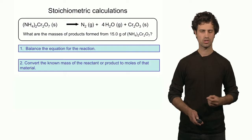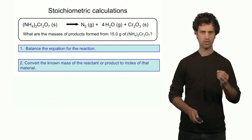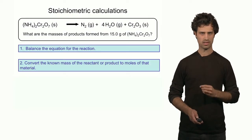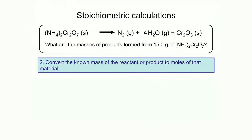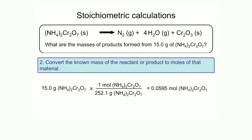The second step is to convert the amount in grams of the reactant into the number of moles of the reactant. I can do that by taking 15 grams of the reactant and dividing by the molar mass of the reactant. Performing this step, I find 0.0595 moles of the reactant.